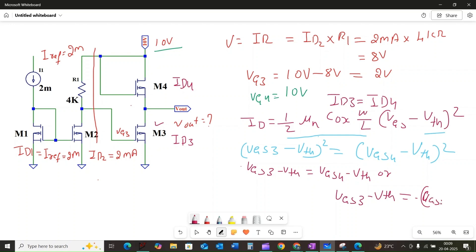or VGS3 minus VTH is equal to minus of VGS4 minus VTH. The second case would imply the VGS value is negative relative to the threshold, which is not the case here as they are in saturation. So we focus on the first case: VGS3 is equal to VGS4.